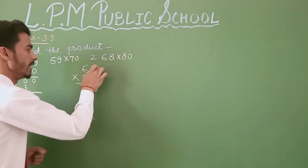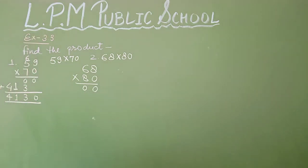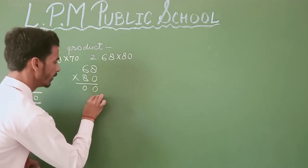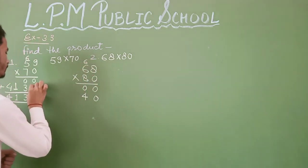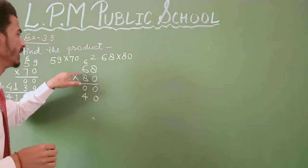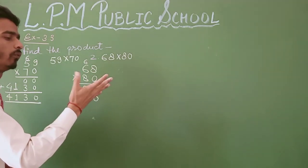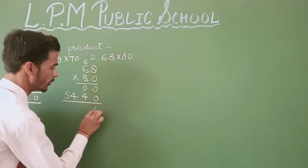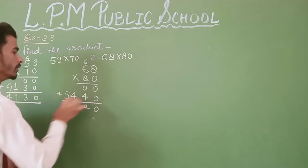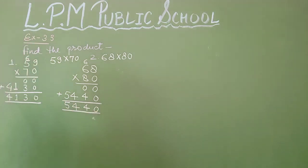Now multiply the 10s: 8 × 8 = 64. We write 4 and carry 6. Then 8 × 6 = 48, plus 6 carry gives 54. Now add the products: 0 plus 0 is 0, 0 plus 4 is 4, and 4 and 5. So the product is 5,440.